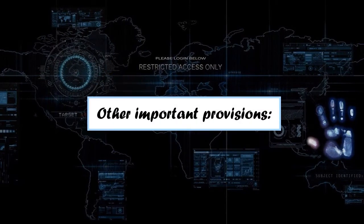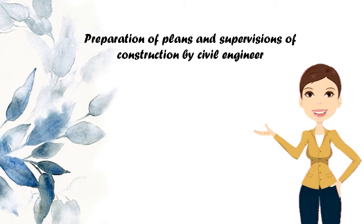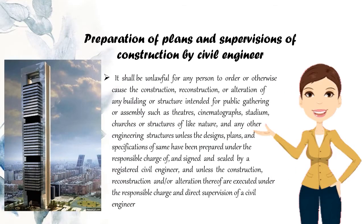Here are some other important provisions under this law. Preparation of plans and supervision of construction by a civil engineer: It shall be unlawful for any person to order or otherwise cause the construction, reconstruction, or alteration of any building or structure intended for public gathering or assembly — such as theaters, cinematographs, stadiums, churches, or structures of like nature — and any other engineering structures, unless the designs, plans, and specifications have been prepared under the responsible charge of and signed and sealed by a registered civil engineer, and unless the construction, reconstruction, and/or alteration thereof are executed under the responsible charge and direct supervision of a civil engineer.